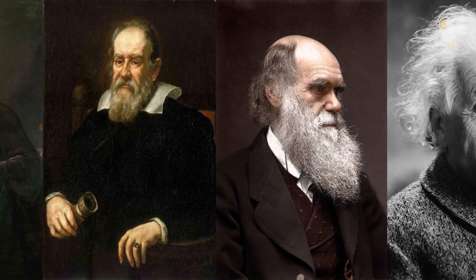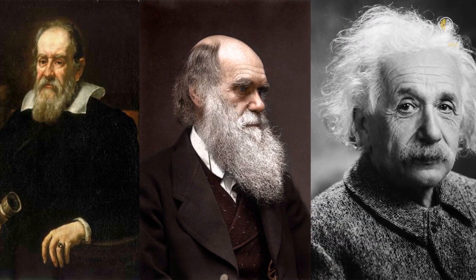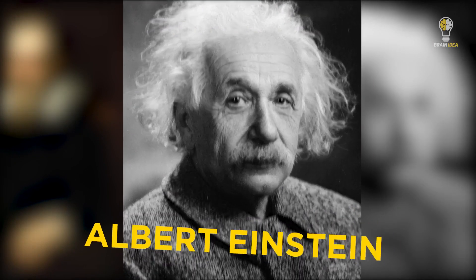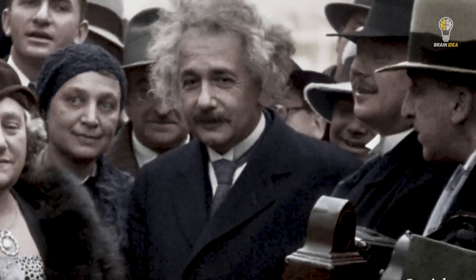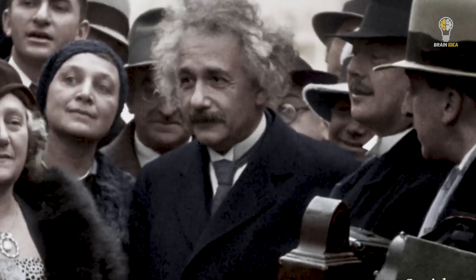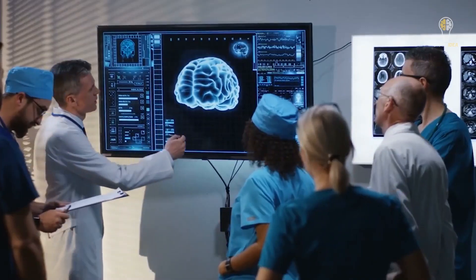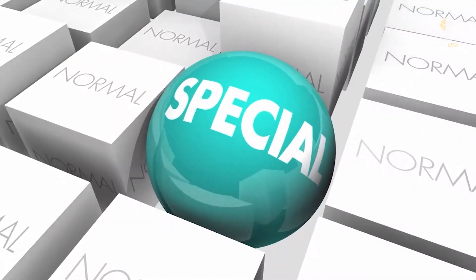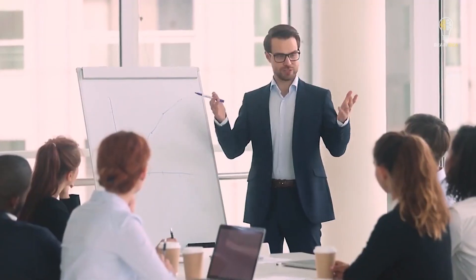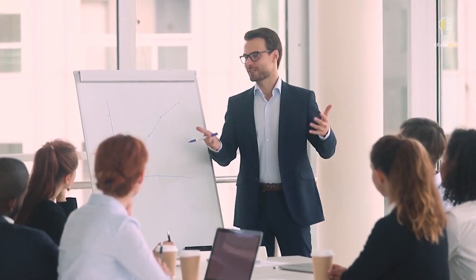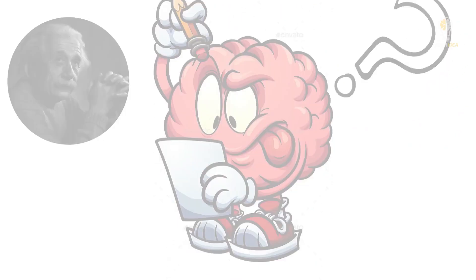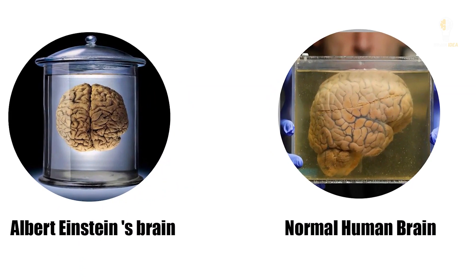When it comes to the names of popular scientists, the name of Albert Einstein is one of the most memorable names. Einstein's brain has a special point. Today, we hope to discuss the difference of his brain when compared with a normal human brain.